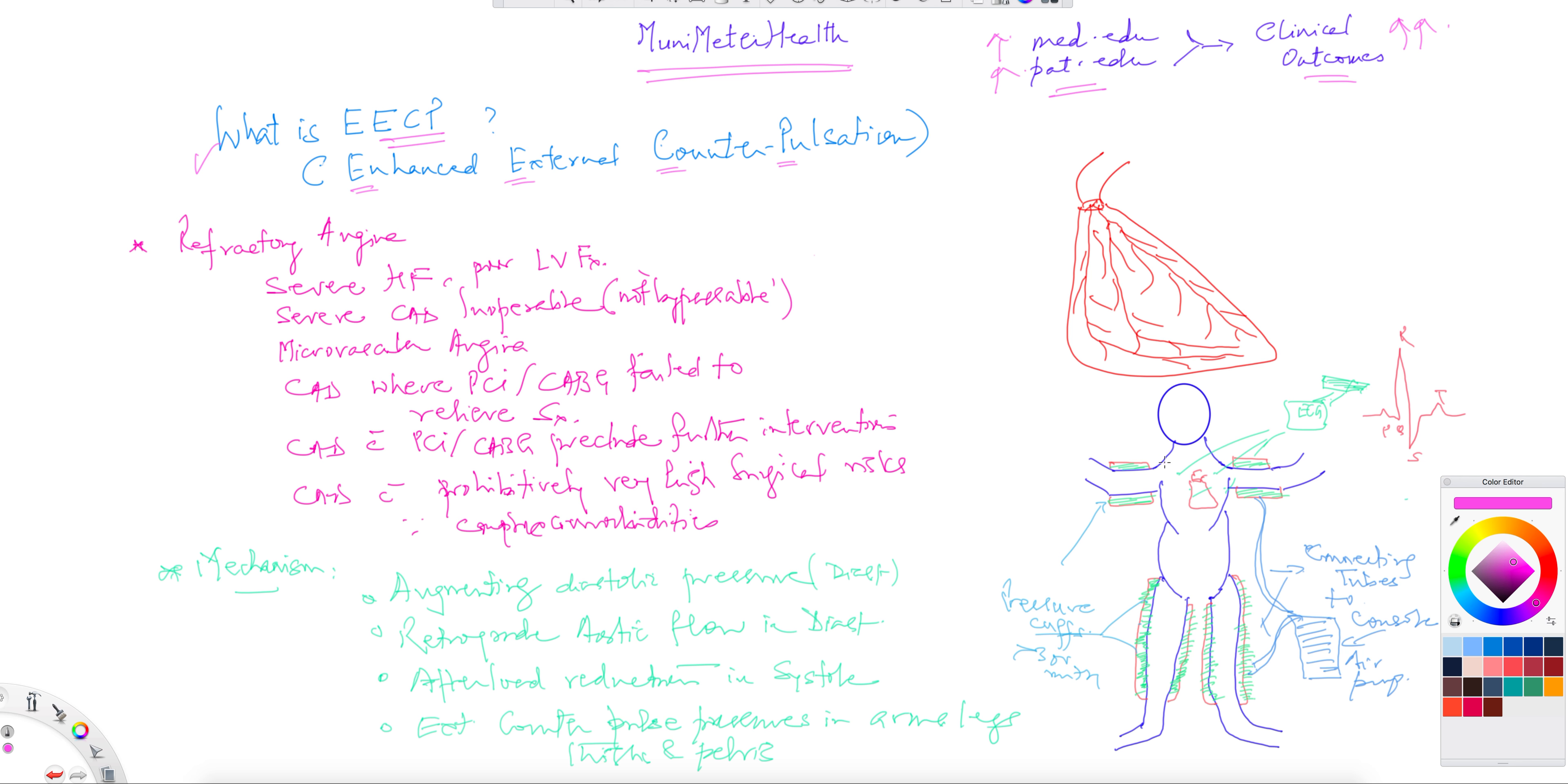I've shown it to you as a schematic. Basically, the person is laying on a table and is hooked up to a console, and the console connects to cuffs, just like your blood pressure cuffs. These cuffs are tied all the way up to the forearms, extending your blood pressure cuffs from the upper arms.